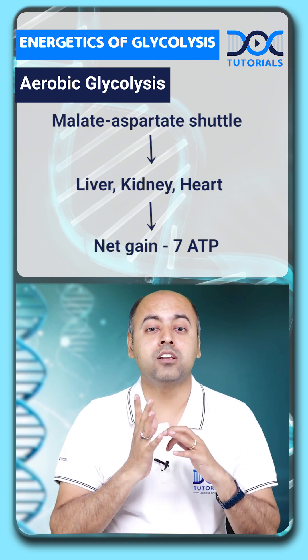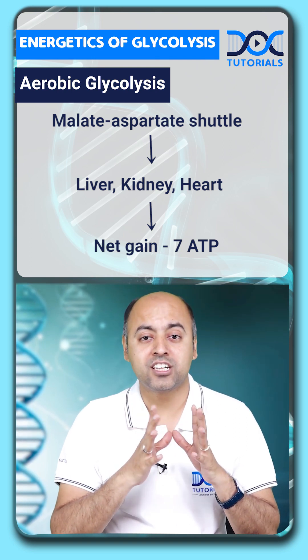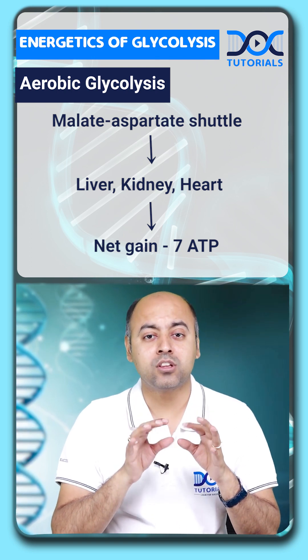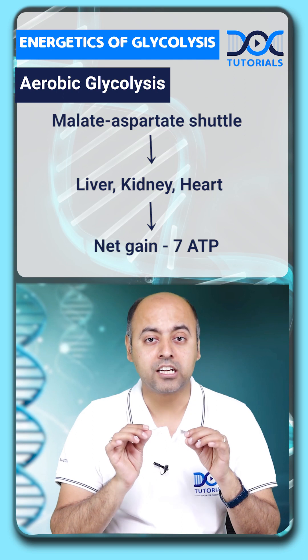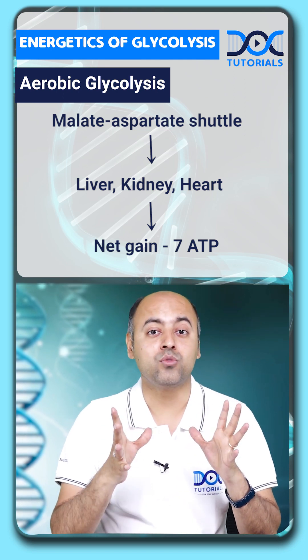So 0, 1, 2, 3, 5, or 7 ATP — depending on the cells, conditions, the shuttles, and the fuel.